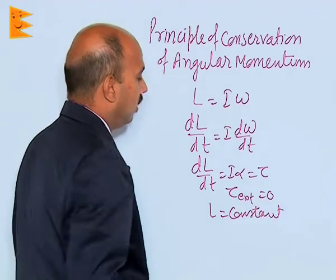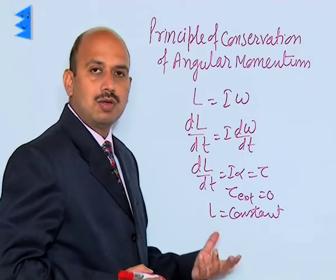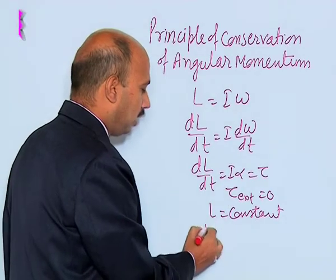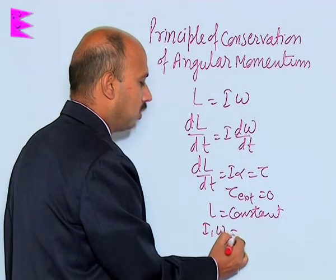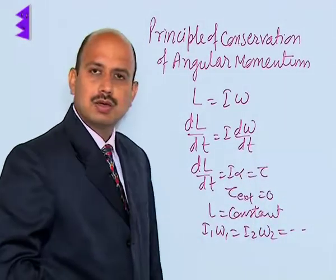It means if in any system external torque is equal to zero, then its angular momentum remains constant. And if angular momentum remains constant, we can write I1 omega 1 is equal to I2 omega 2.